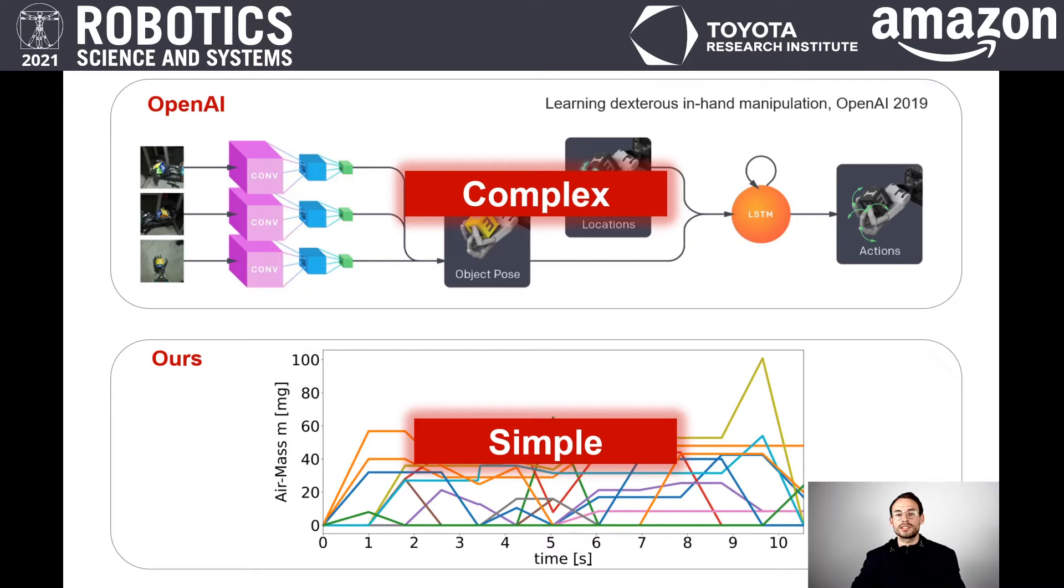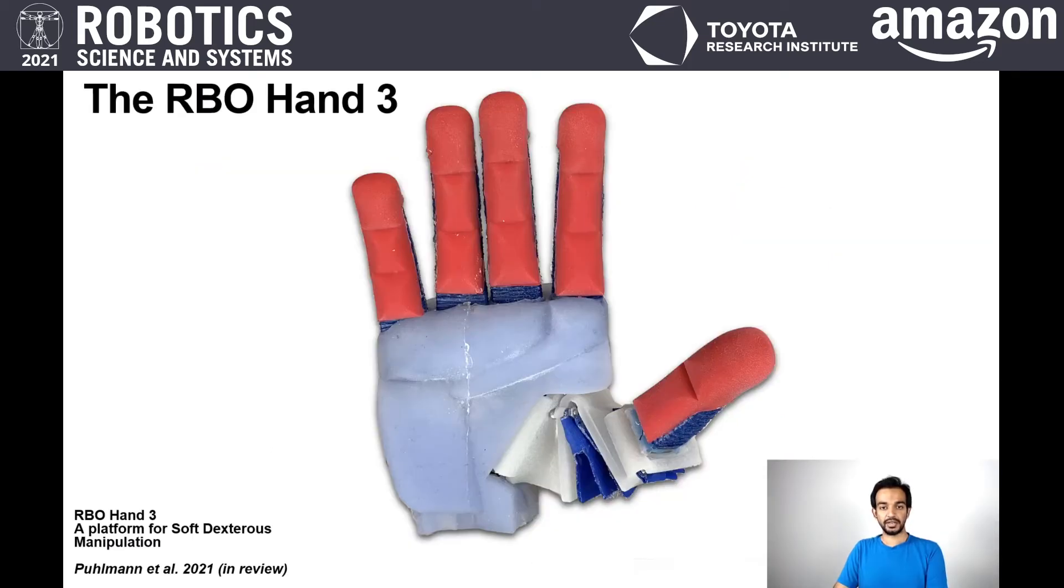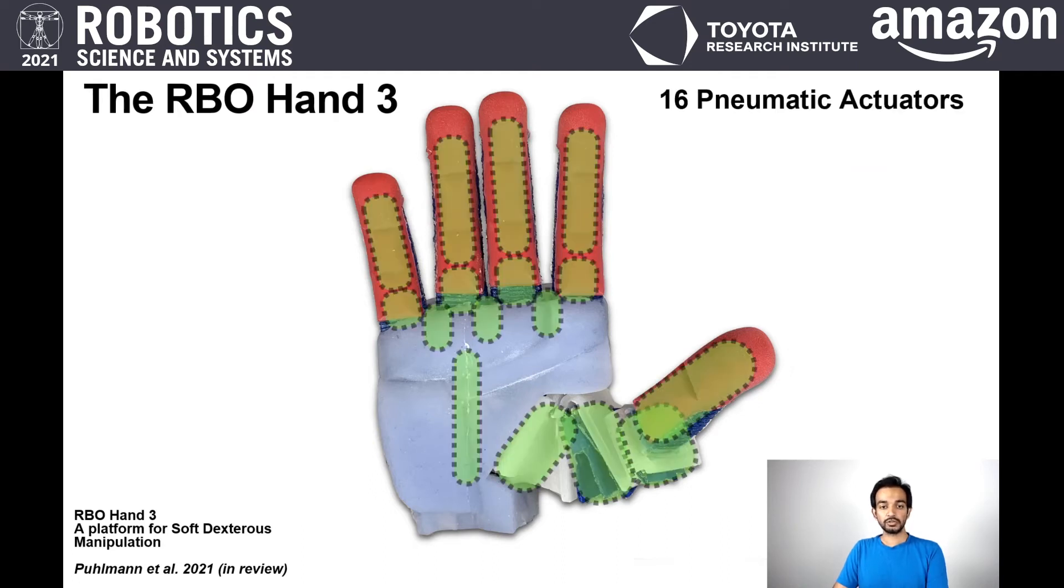This discrepancy arises because this is not a fair comparison. This puzzle has a missing piece. And this is the hardware. This hand is the new RBO Hand 3, which is made mostly of soft deformable silicone. We control it by pumping air in and out of 16 actuated degrees of freedom. So how does this hand reduce the complexity of manipulation?